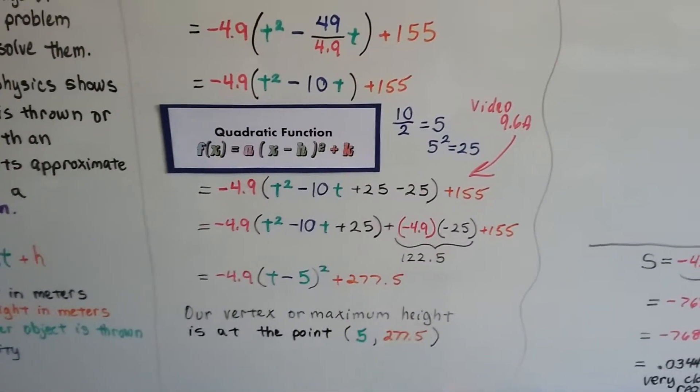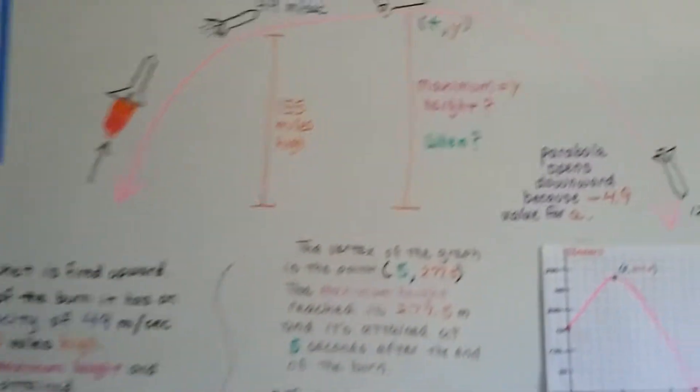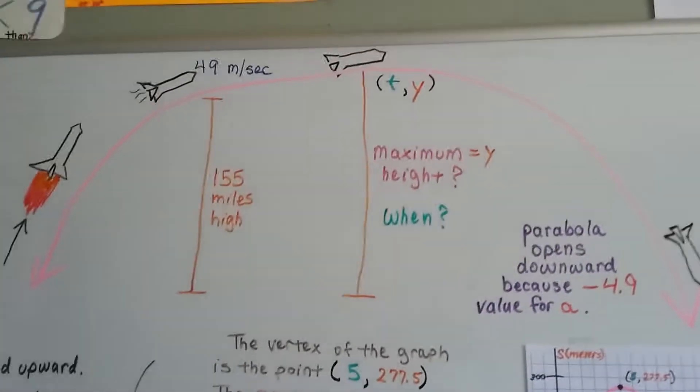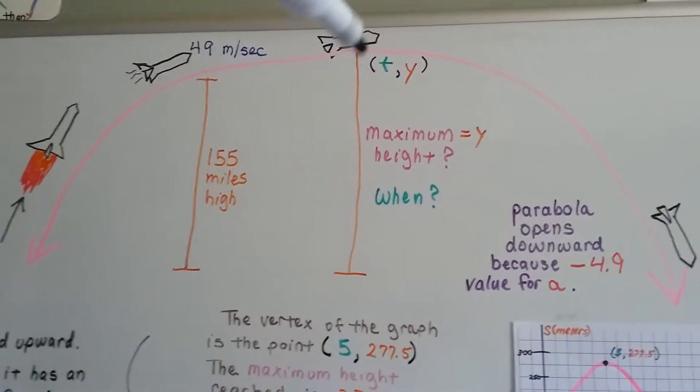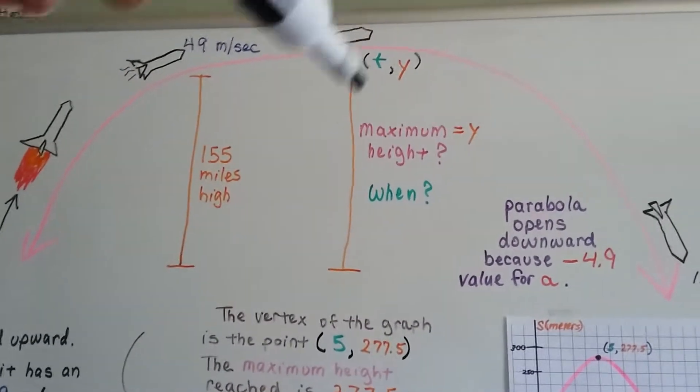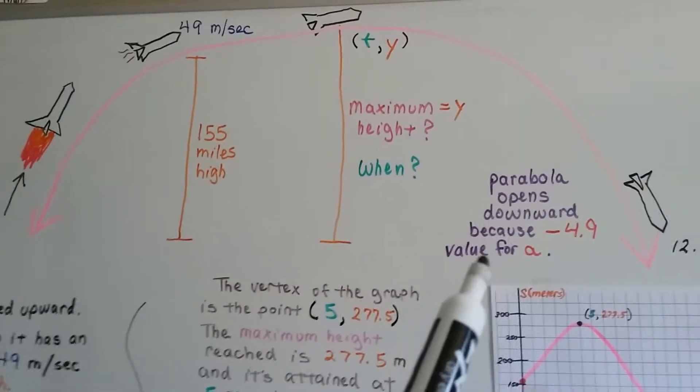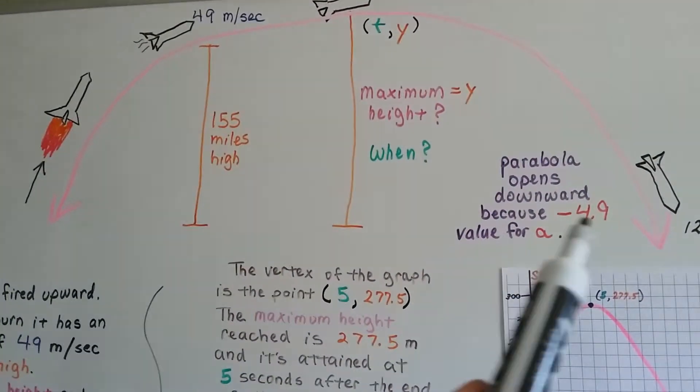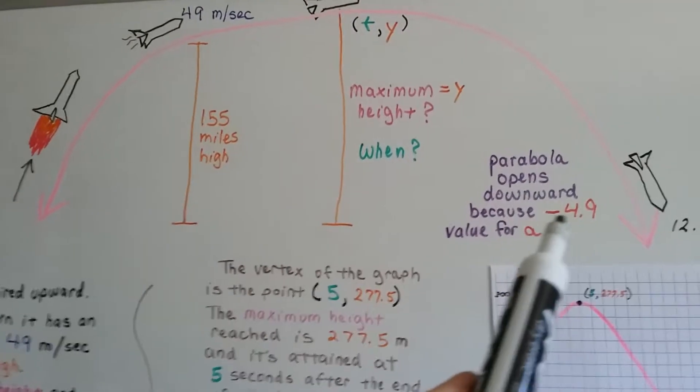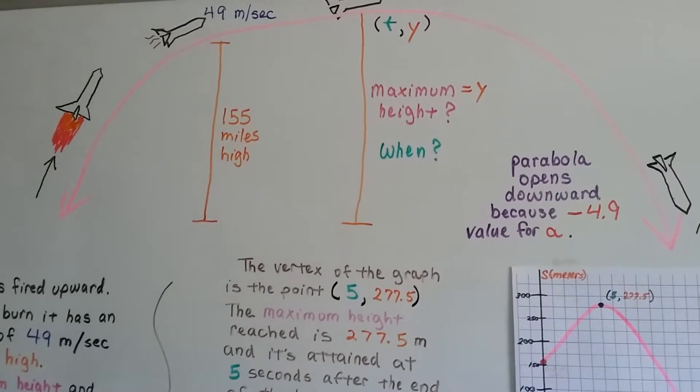We know our maximum height is 277.5 at 5 seconds. So when it got to the vertex of our parabola, it was at 277.5 feet at 5 seconds. We also know that the parabola opens downward because our equation started with a negative 4.9 for the a value.